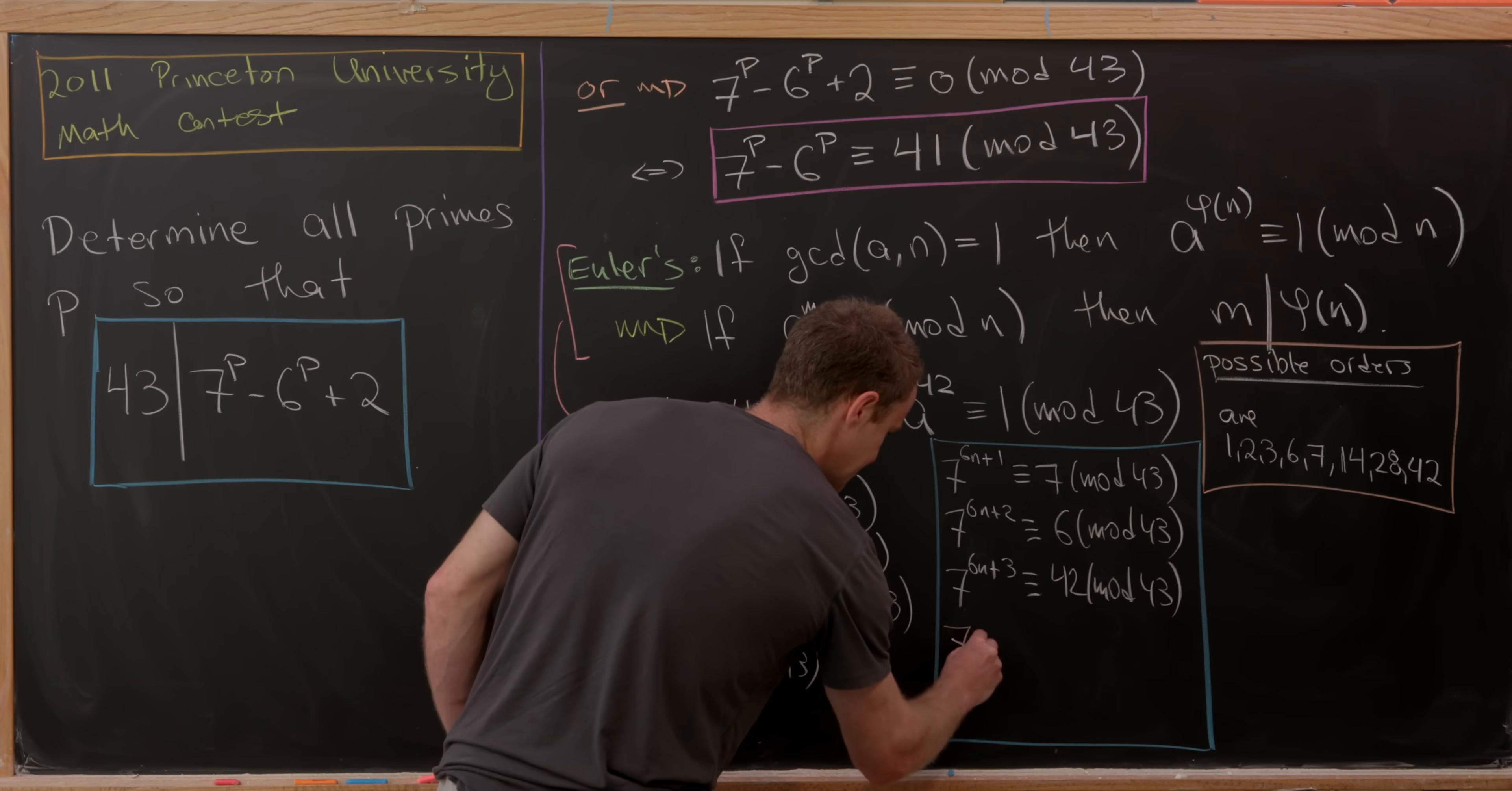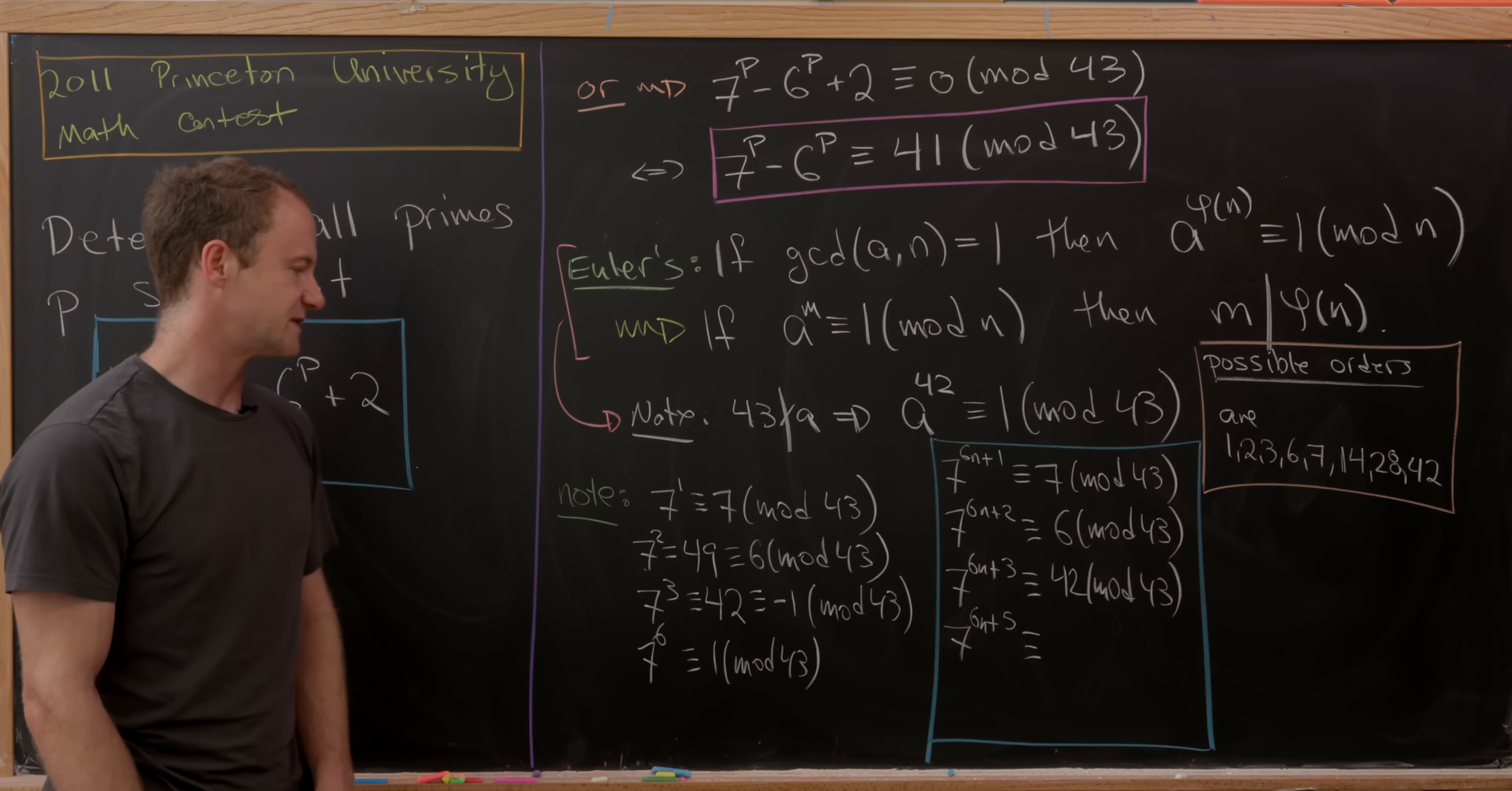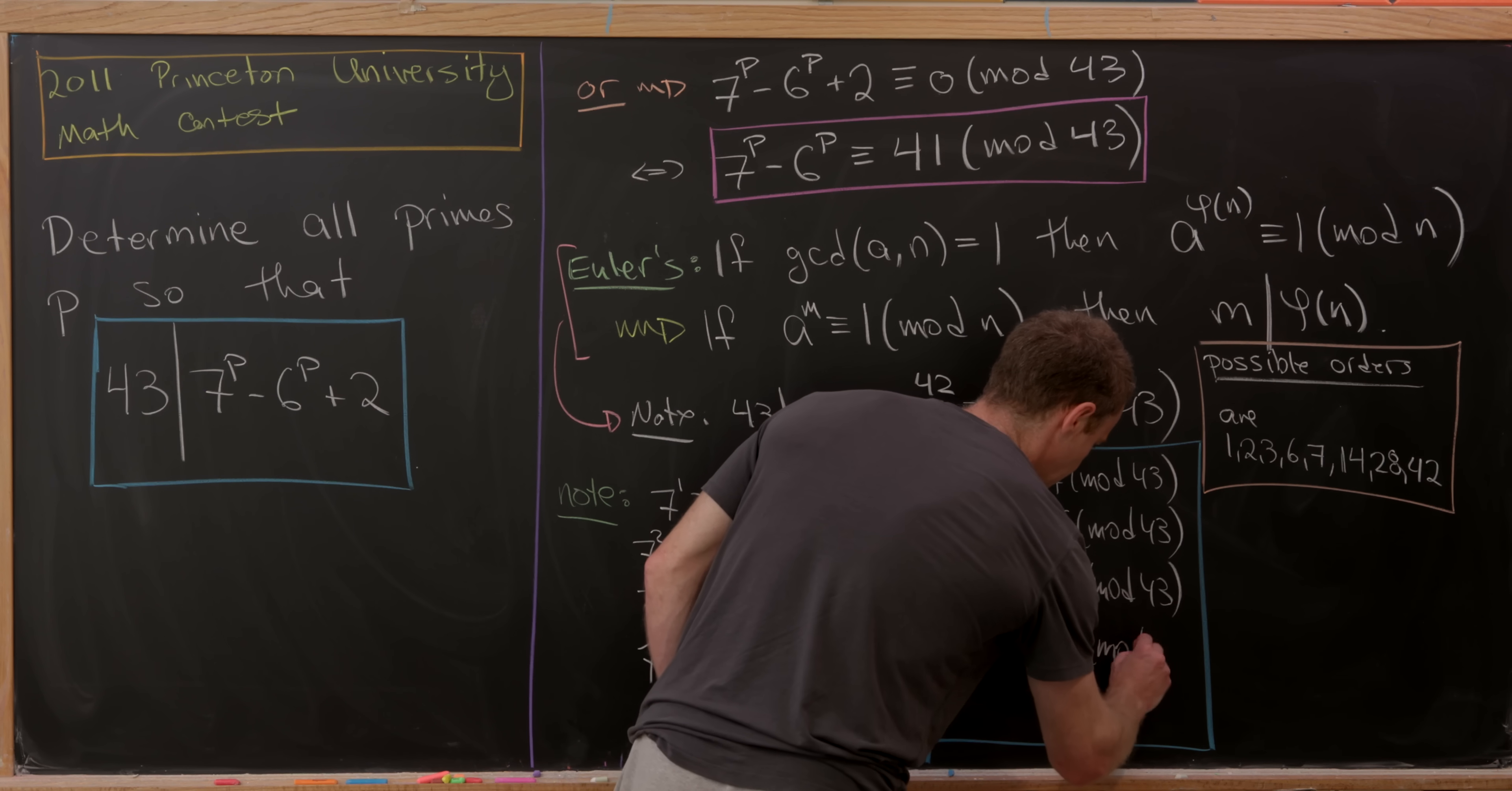Finally, 7^(6n+5) is congruent to what? That'll be like 6 times -1 because 2 plus 3 is 5. But 6 times -1 is -6, which is 37 mod 43.